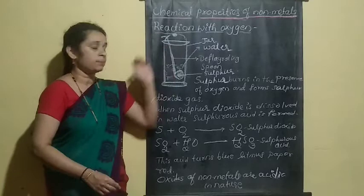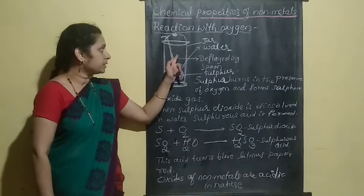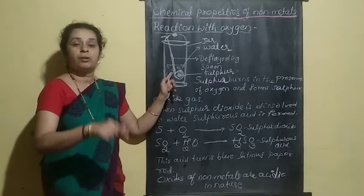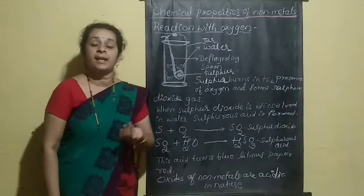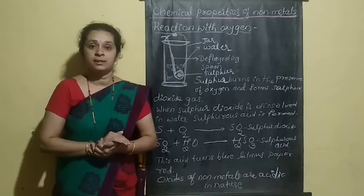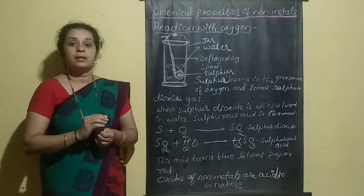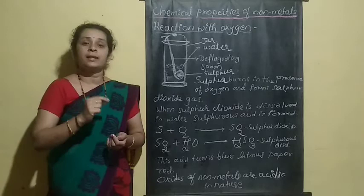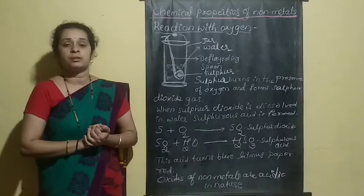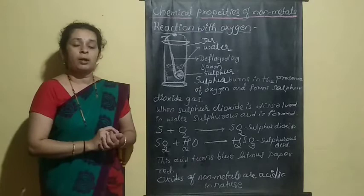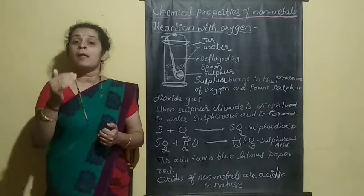The sulfur dioxide gas present in the jar reacts with the small amount of water. When dissolved properly, it forms an acid — sulfurous acid. You then dip a litmus paper — red or blue — into this acid to check whether it is acidic or basic.